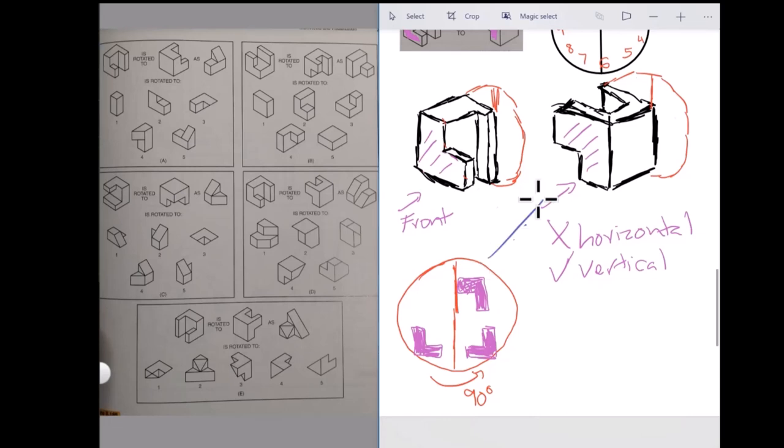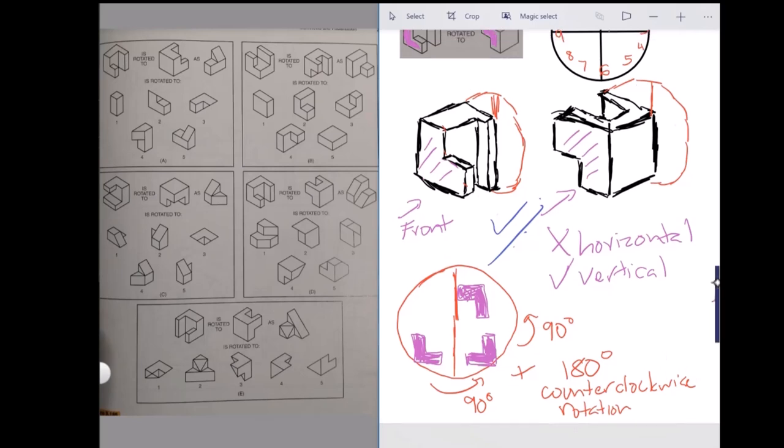So, if we rotated this shape two 90 degree angles, then that means that the total amount that we rotated was 180 degrees counterclockwise, which is in the opposite direction of a clock.